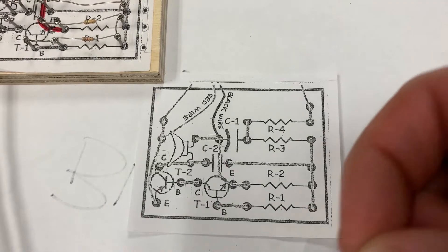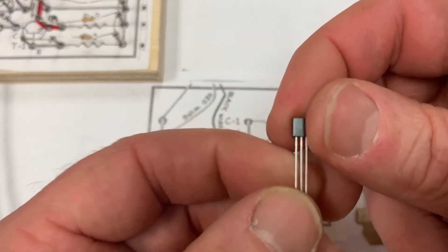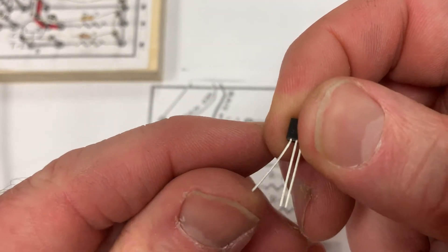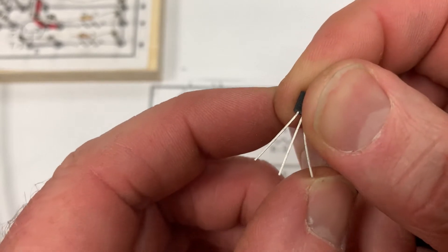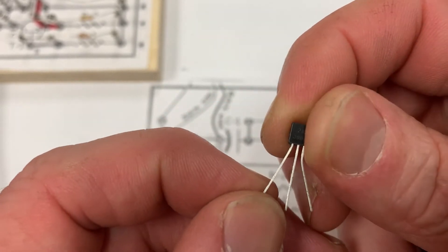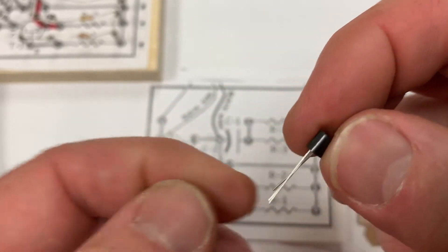For example, transistor 1, if I take these legs and separate them slightly, being careful, and bend them gently, I know that the left leg is the letter E, and you can check your information sheet for that.